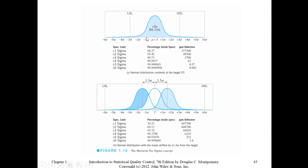When we write NORMSDIST of negative one, it gives us all the area before that point. When we write NORMSDIST of positive one, it gives us all the area before that line. To calculate the area between minus one and plus one, we subtract the area before minus one from the area before plus one.